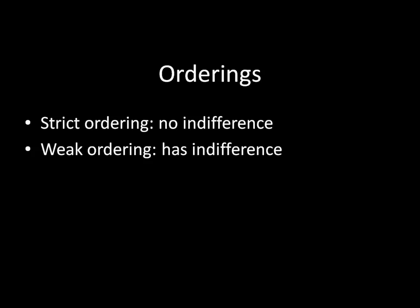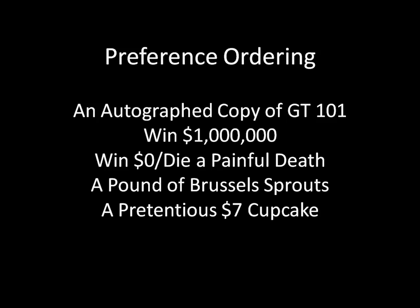So if you have a preference ordering that has indifference — for example, like this one — this would be a weak ordering, because this individual is indifferent between winning zero dollars and dying a painful death. It doesn't actually matter whether an individual has a strict ordering or a weak ordering. Either one is perfectly fine. It's perfectly fine for an individual to have indifference and still be rational, and still be able to represent their preferences with an expected utility function.